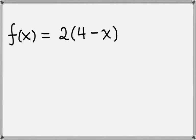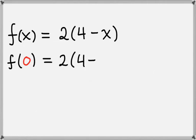What if our function looks like f of x equals 2 times 4 minus x? Let's evaluate this function at the same three values. So for f of 0, we're going to plug in 0 for x. That leaves us 2 times 4 minus 0, which is just 2 times 4, so that's 8. So f of 0 equals 8.